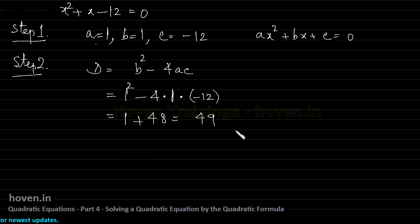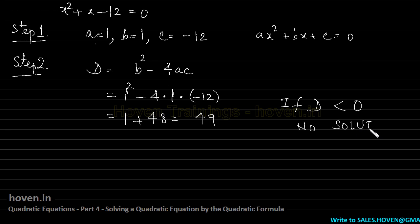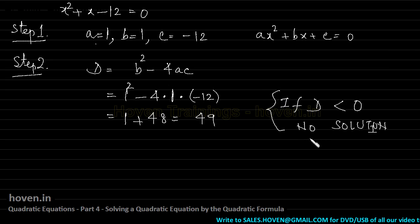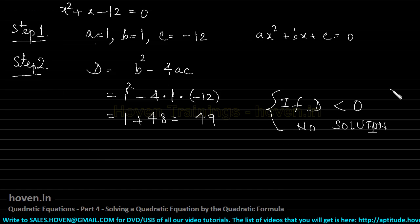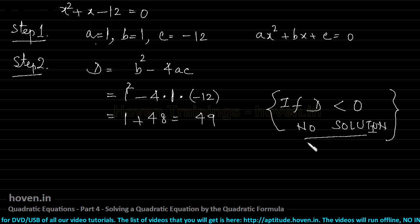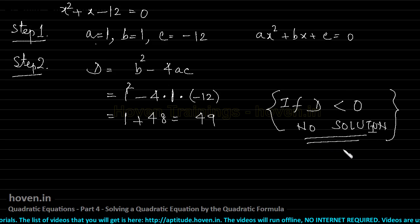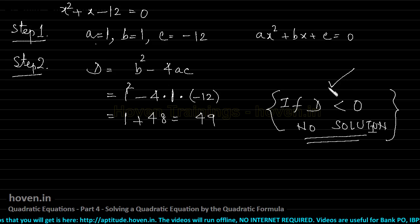Once you get the discriminant, if d is less than 0, we can outrightly say that this equation doesn't have any solution. This is the biggest advantage of using the quadratic formula — there is no way to conclusively say that a quadratic equation has no solution if you are using the direct shortcut method.